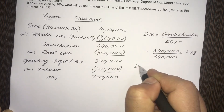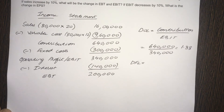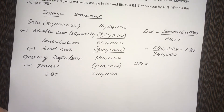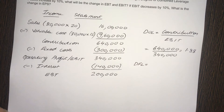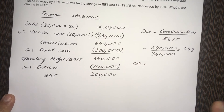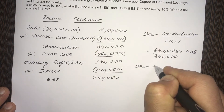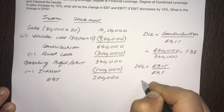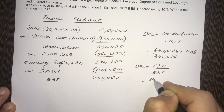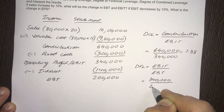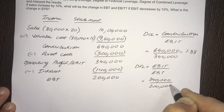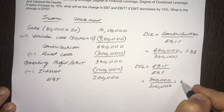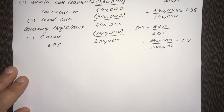Then DFL. You know, there are two formulas: one is when there is no preference dividend, and the other is when there is preference dividend. In this problem there is no preference dividend, so the formula will be DFL equals EBIT divided by EBT. EBIT is 3,40,000 and EBT is 2,00,000, and that works out to 1.7.